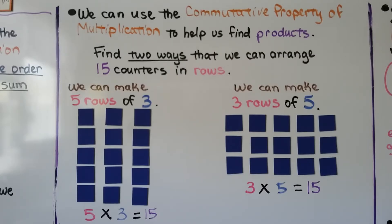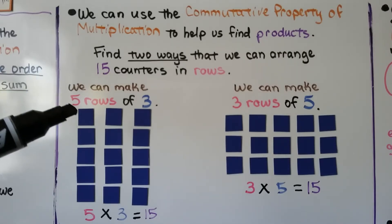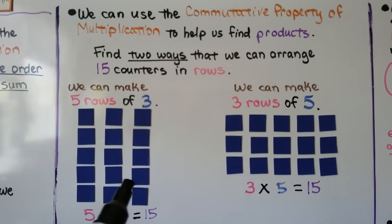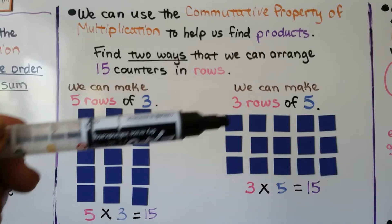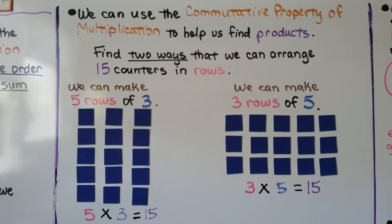We can use the commutative property of multiplication to help us find products. Find two ways that we can arrange 15 counters in rows. We can make 5 rows of 3 — 1, 2, 3, 4, 5 rows of 3 in each row. We can make 3 rows of 5 — 1 row, 2 rows, 3 rows with 5 in each row. So 5 times 3 is equal to 15, and 3 times 5 is equal to 15. We can make 5 rows of 3 or 3 rows of 5.